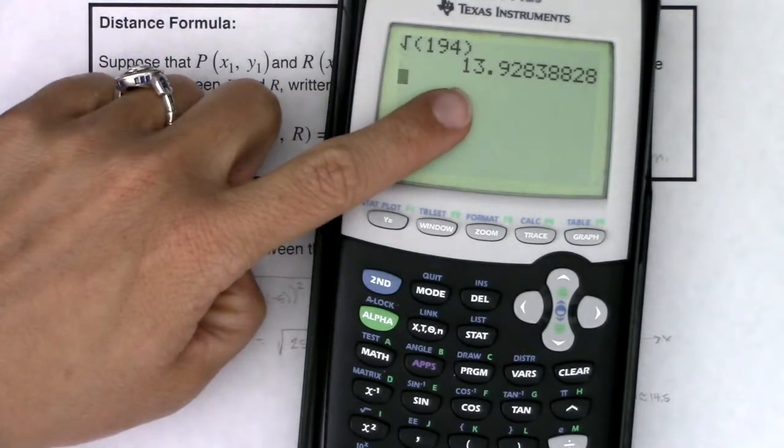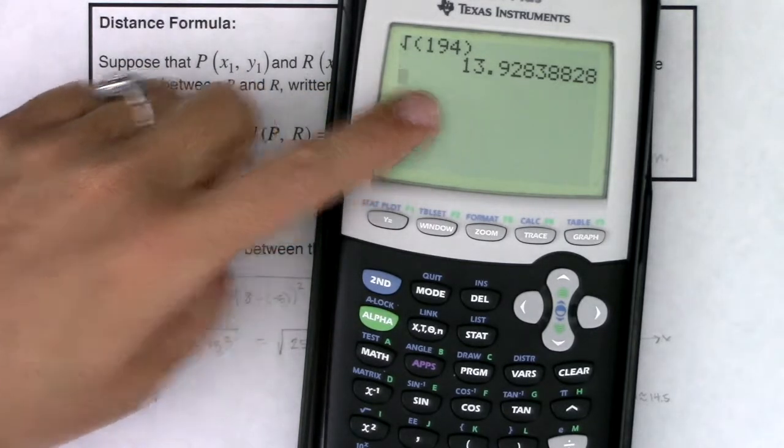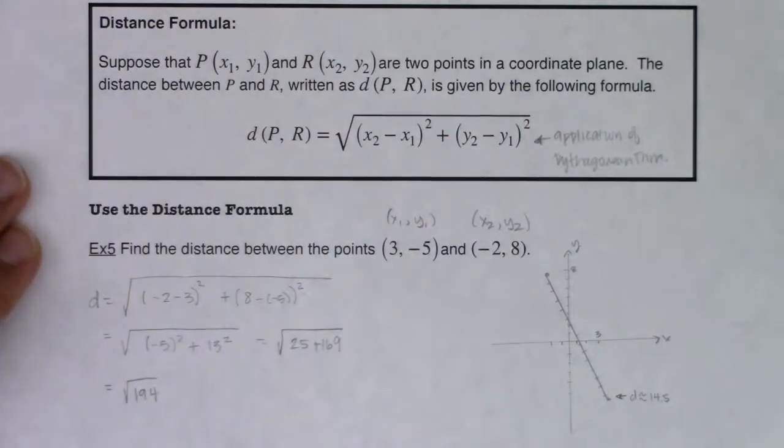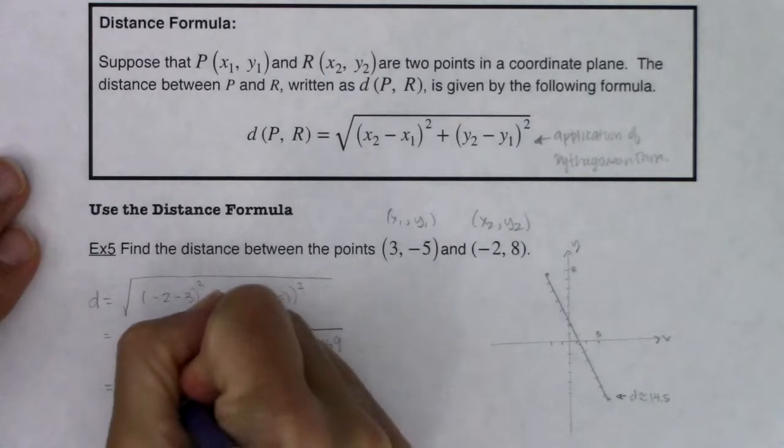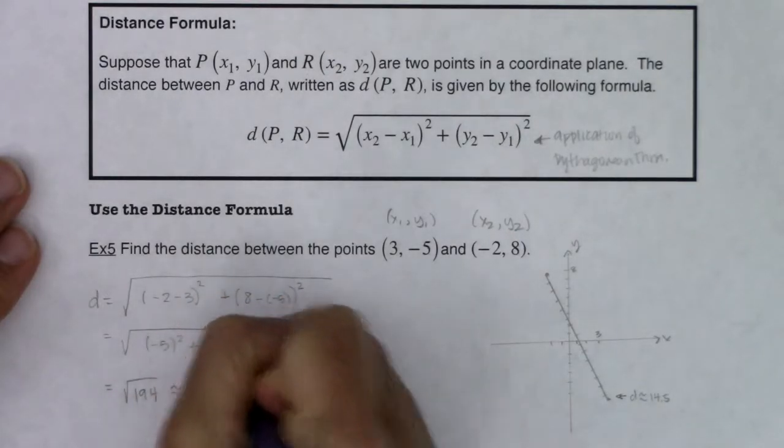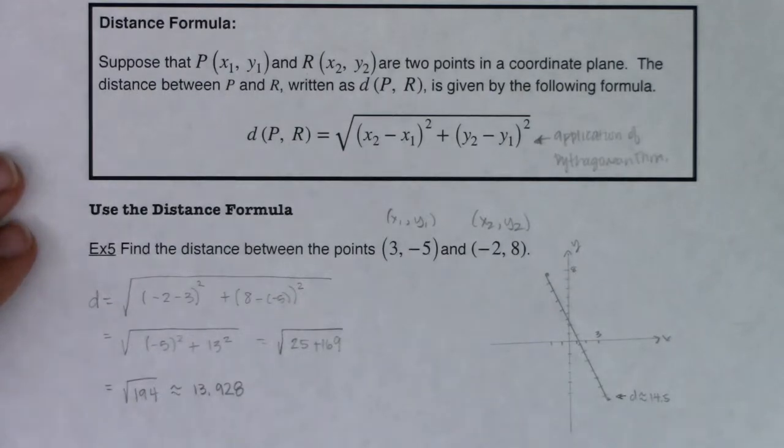I thought 14 and a half, this is 14, so I wasn't too far off. So what do we have, 13.928? So let me write that down. So this is approximately 13.928. Great.